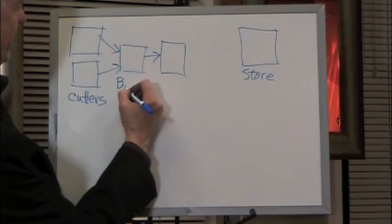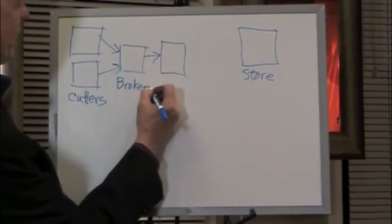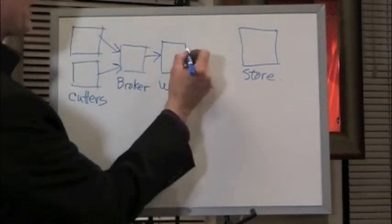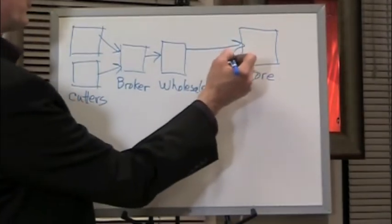So we have the cutter, and we have the broker, and then we have the wholesaler. Now the diamond at this point does go to the jewelry store.